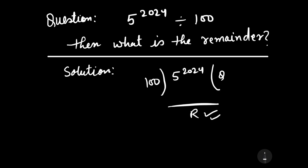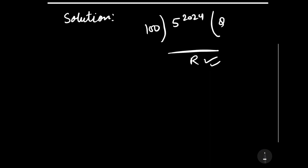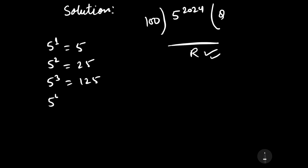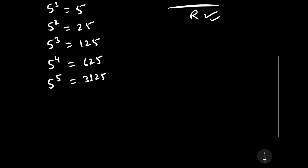For finding the remainder, let us observe the different powers of 5. 5 to the power 1 is equal to 5, 5 to the power 2 is equal to 25, 5 to the power 3 is equal to 125, 5 to the power 4 is equal to 625, and 5 to the power 5 is equal to 3125. But with this process, can we find 5 to the power 2024? No, obviously not.